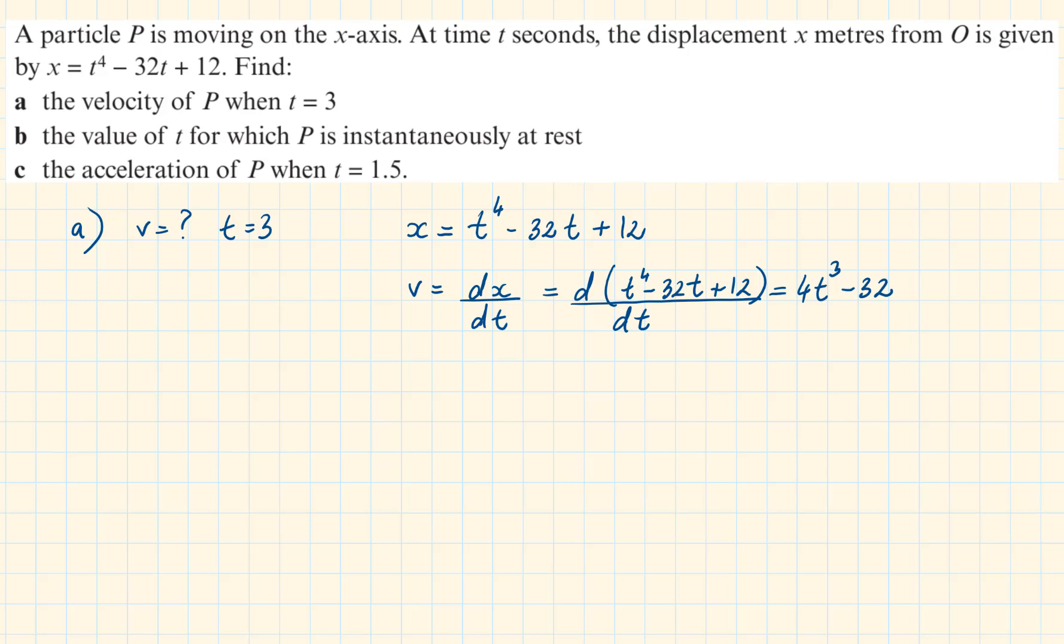We are interested in the velocity when the time is equal to 3. We replace the value of t, so v is equal to 4 times 3 cubed minus 32, and this is equal to 76 meters per second.